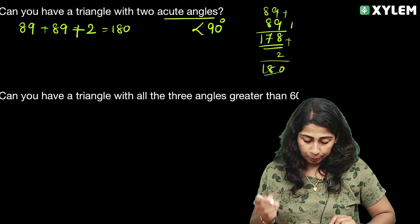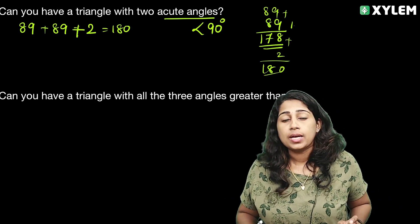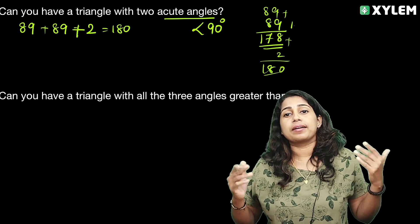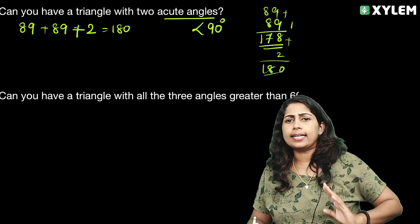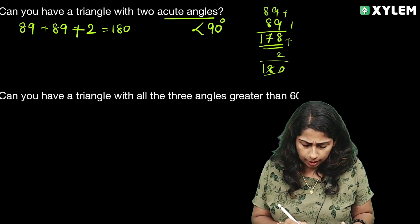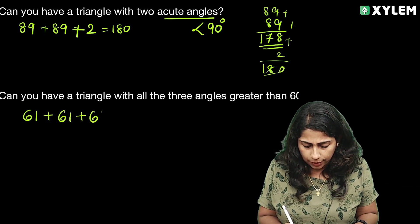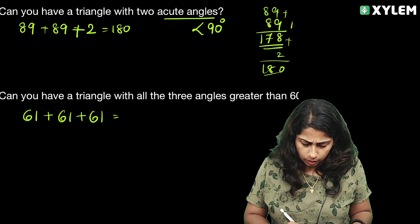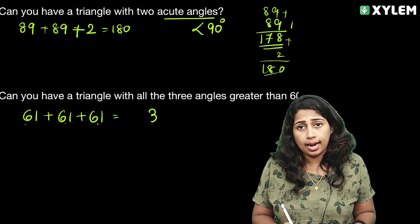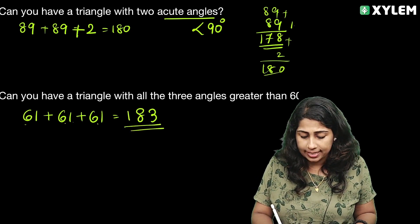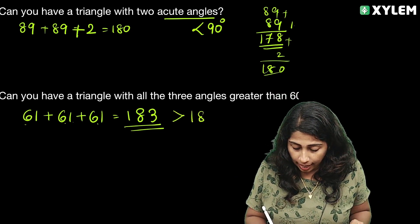Can you have a triangle with all three angles greater than 60 degrees? Let's check. If all three angles are greater than 60, the minimum value would be 61. So 61 plus 61 plus 61 equals 183. Is 183 possible for a triangle?